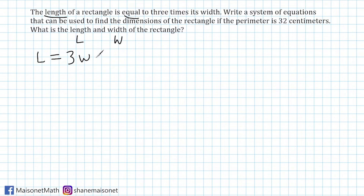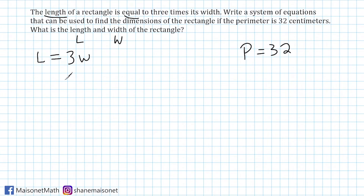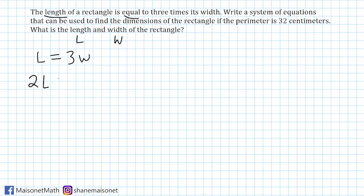Now we have to figure out what our second equation is going to be, and it is not that straightforward. It does say that the perimeter of this rectangle is 32 centimeters. We cannot write P equals 32, because that would give us a third variable, and we can only have two variables. So we must express perimeter using width and length. A rectangle has four sides — two lengths and two widths — so 2L plus 2W equals 32. This is our second equation in the system.